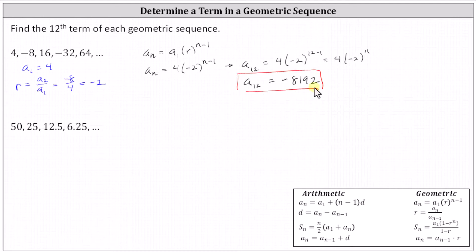Now looking at the second sequence, we have the first term a sub one equals 50. The common ratio r is equal to, let's use a sub two divided by a sub one, which is 25 divided by 50, which equals one half.